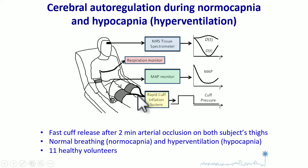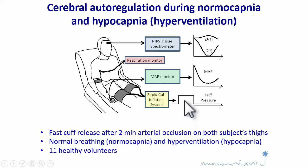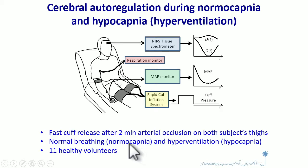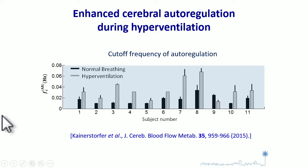For the first objective — obtaining a cutoff frequency of autoregulation — we used essentially the same protocol as ultrasound studies: two pneumatic calf cuffs inflated above systolic pressure and then suddenly released, inducing a transient decrease in arterial pressure. We then analyzed the response of deoxy and oxy-hemoglobin using the CHS model to obtain the cutoff frequency. Measurements were done during normal breathing and during hyperventilation-induced hypercapnia, where autoregulation is known to improve. In 10 out of 11 subjects, the autoregulation cutoff frequency increased between normocapnia and hypercapnia, as expected.